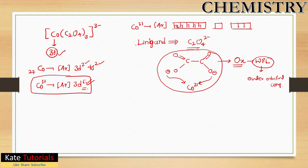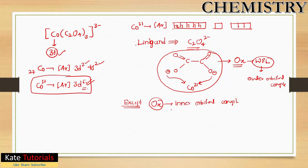Here is the exception: the same oxalate ligand, when complexed with cobalt, forms an inner orbital complex instead of an outer orbital complex. This means that in this specific case, oxalate is acting as a strong field ligand. This is the only exception you need to remember.